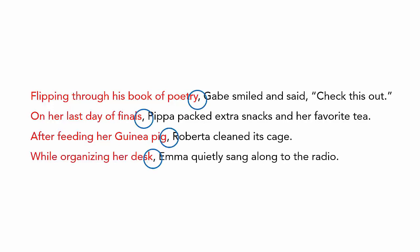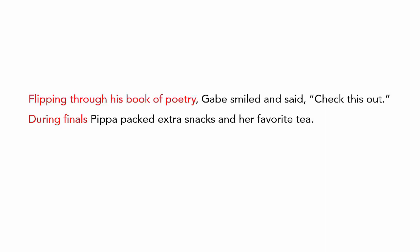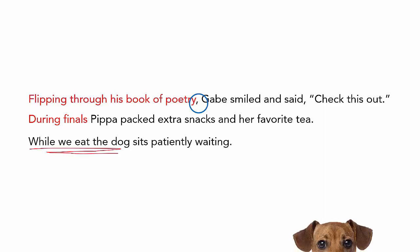The earth won't stop turning if you don't use a comma after an introductory phrase. Some people suggest only using one if that phrase is over four words long. Just be consistent in your use and make sure that you have one if the meaning of the sentence could read a couple different ways. Like, while we eat, the dog sits patiently waiting.